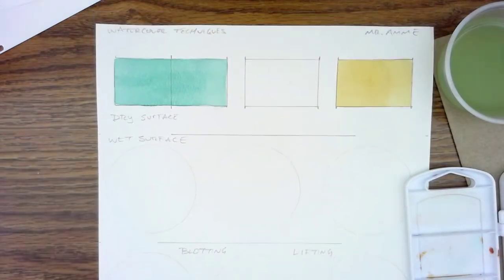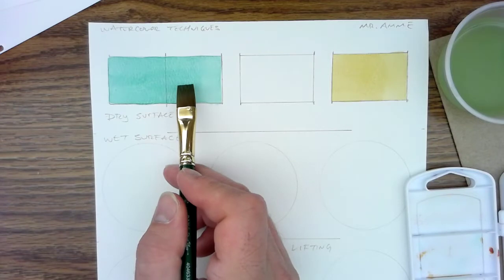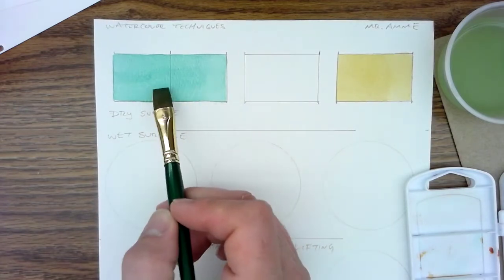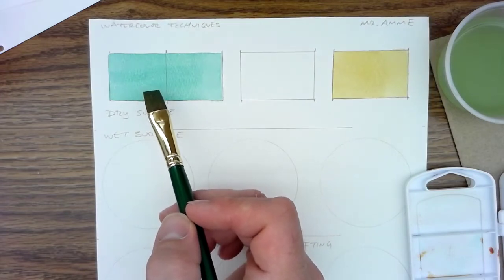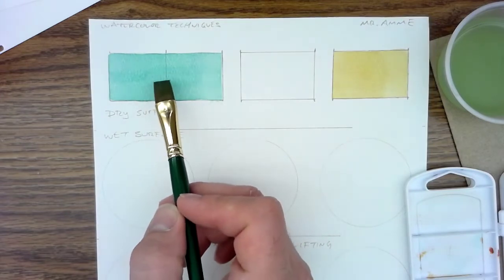Now, in the watercolor techniques, this is all dry surface. So what I did here in this section, we're going to be doing something called a one color overlap.